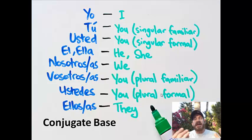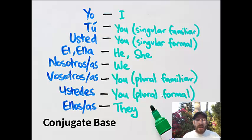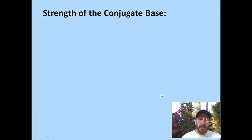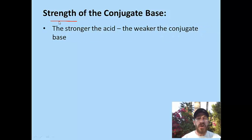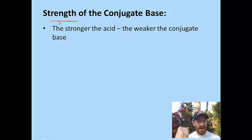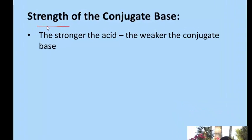You may have talked about conjugates before, but what is a conjugate base in chemistry? A conjugate base is simply the part that is left behind after the acid loses its proton. Today we're going to talk about the strength of conjugate bases. The main phrase to remember is: the stronger the acid, the weaker the conjugate base.